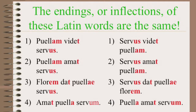Servus is servant and puella is girl. The sentence makes sense if I say the girl sees the servant, and it also makes sense if I say the servant sees the girl. But which one is right? Only the inflectional endings of the words will be able to tell us that for certain. In this sentence, because servus ends with -us, it is the subject of the sentence, and inflection communicates the function of the noun in a sentence. Puella ends with -am, and that means it's the direct object — just a fancy way of saying that something is happening to the girl. Because of those inflectional endings, both sentences must say the servant sees the girl.